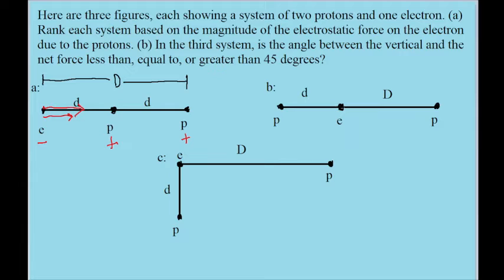Now let's look at situation B. Once again, the electron and the proton will experience attractive forces towards one another. So this electron will have one force directed to the right because of the proton far away at a distance big D. But there will be another force, this time to the left, because there's another proton closer by, and because they have opposite charges, it will experience that attractive force.